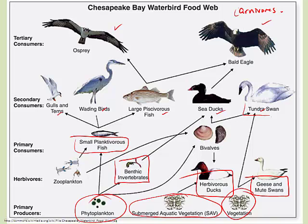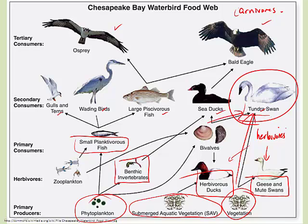Some animals eat only plants — those would be herbivores. An example of a herbivore would be any of the primary consumers like geese, swans, ducks, and the small planktivorous fish. But some organisms eat both plants and animals. An example in this graphic is the tundra swan, because it eats both vegetation and bivalves or shellfish, which are animals. So the tundra swan would be an example of an omnivore — it eats everything, plants and animals.